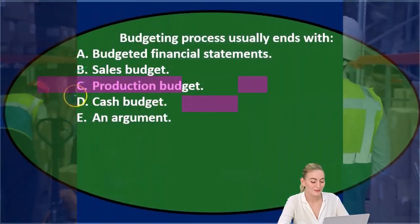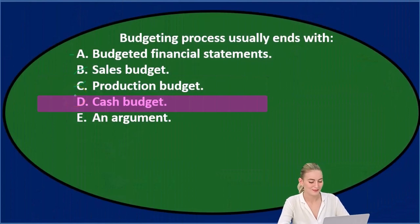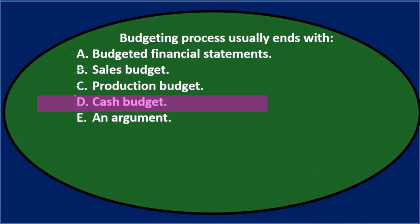D says the cash budget, and that's towards the end. Maybe we'll keep that for now because we've got to do all the other stuff before we can do the cash budget.